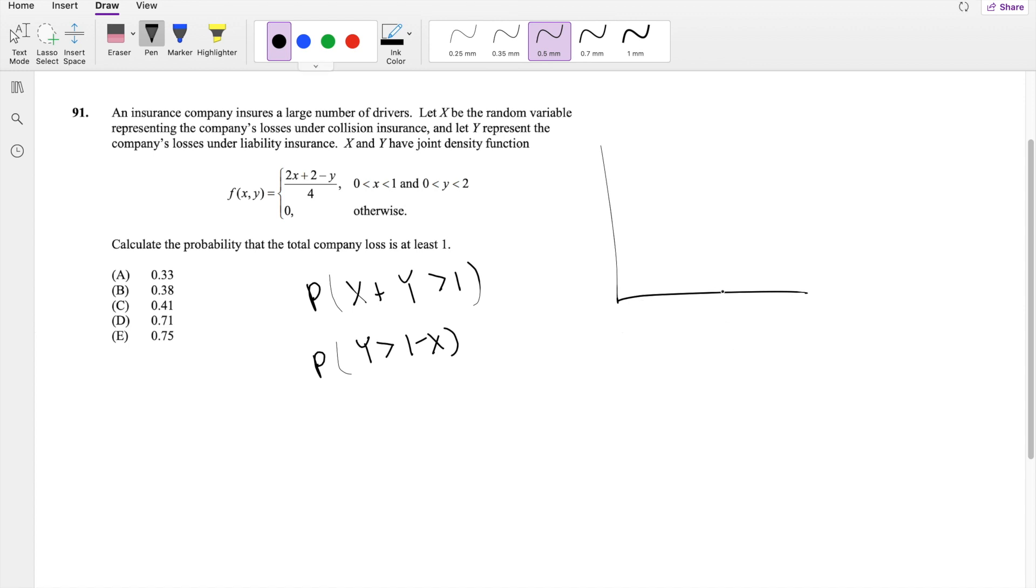So X is going from 0 to 1, Y is going from 0 to 2, and then this graph is going from Y equals 1 minus X. So it's going to be like a line like this. And we're looking for what is the probability that it's greater than this number, so it's like this part right here. This is the part that we're looking for.